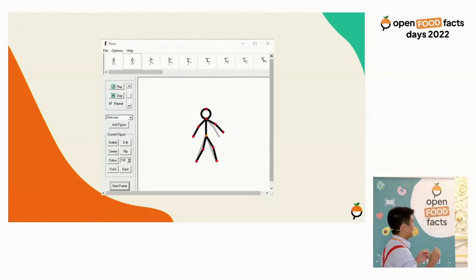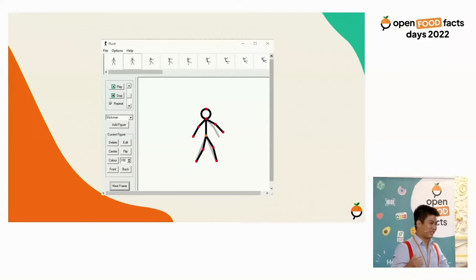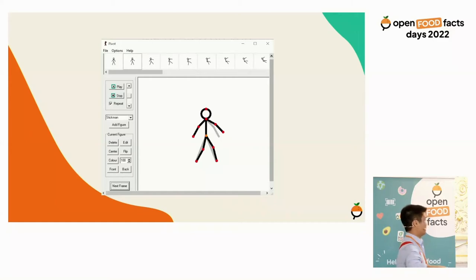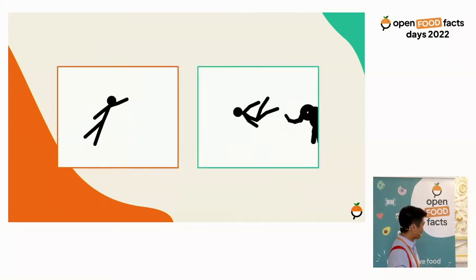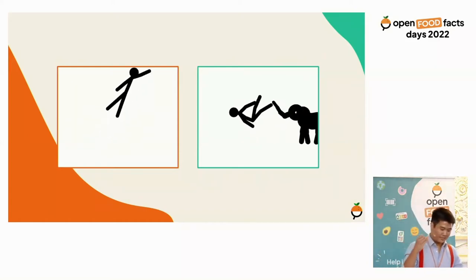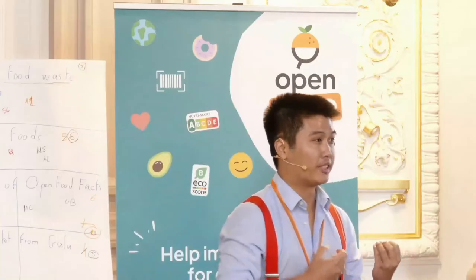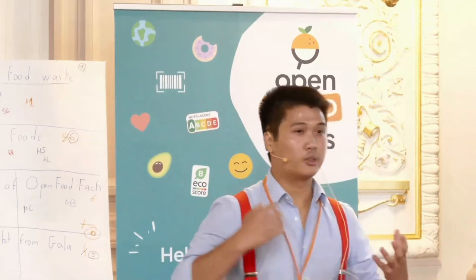I was wondering if anyone knew the program Pivot. In the Netherlands it was quite popular when we were children. It's actually this animation software where we can make little stick figures do silly things, as you see in the example. The idea behind animation is actually quite nice because you can really create your own world and decide on the way your world feels, looks, and the way things interact.